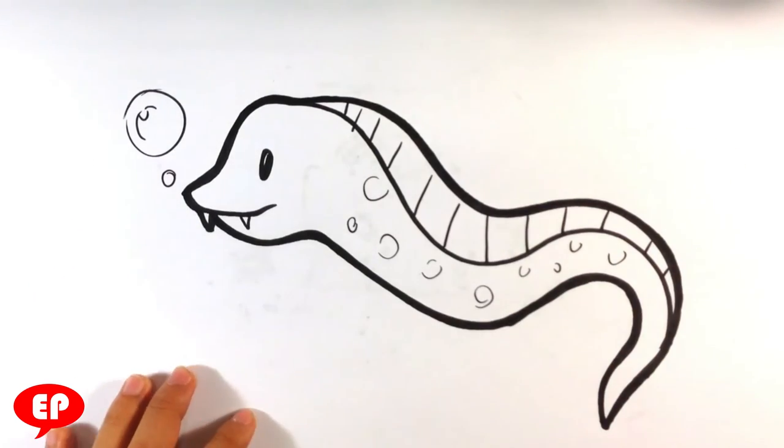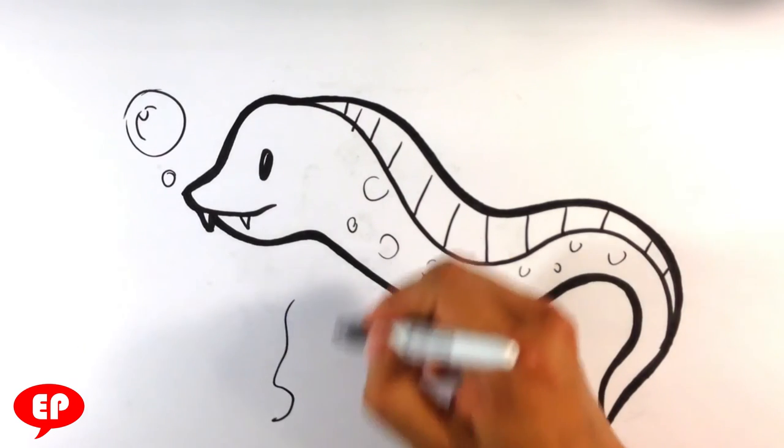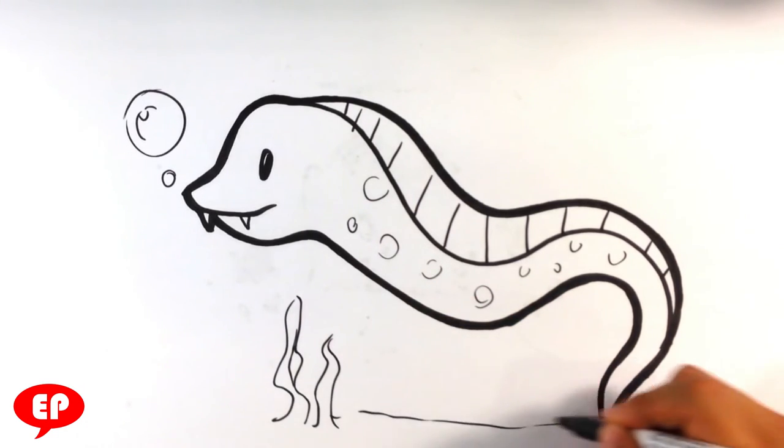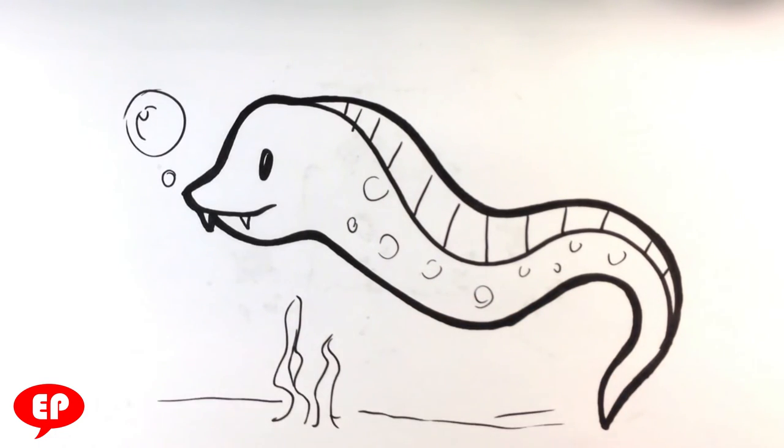And there we go. That's pretty much it. That's an electric eel. If you want, you throw a little grass things in there. Algae or something that are on the sea floor. I used to do that a lot. Very lightly.